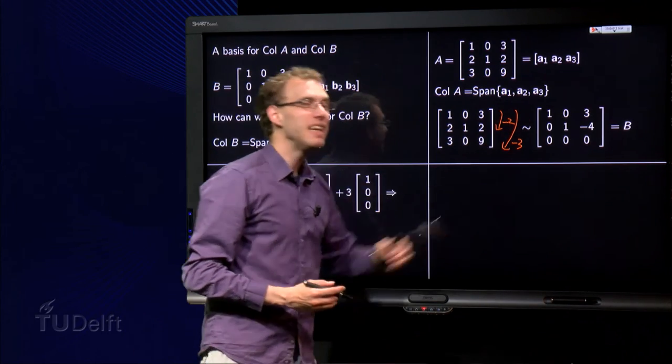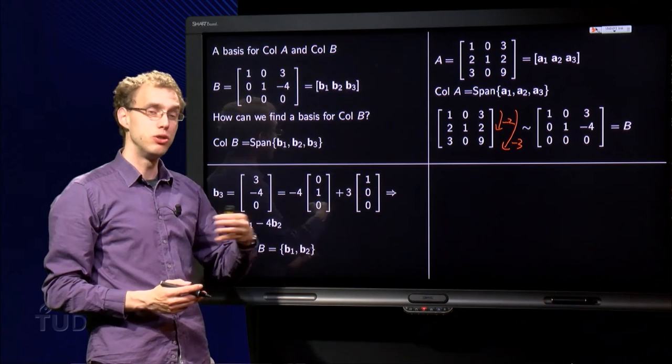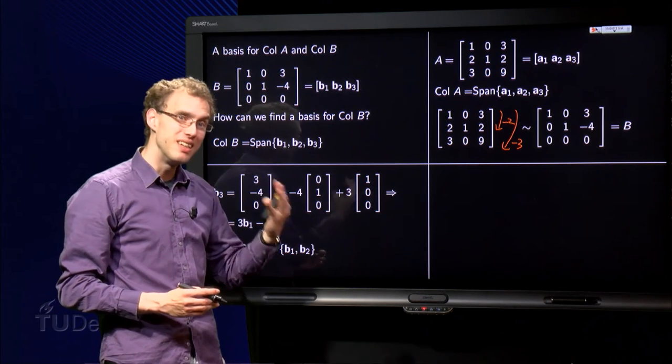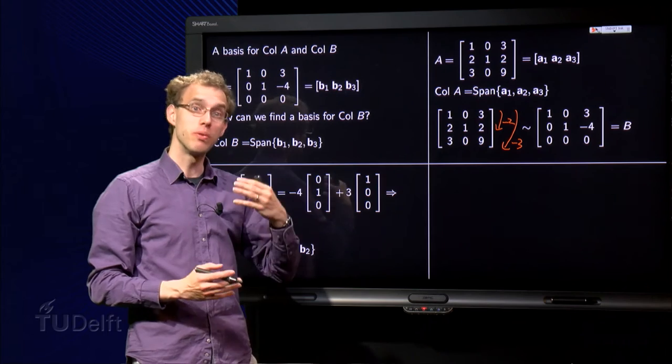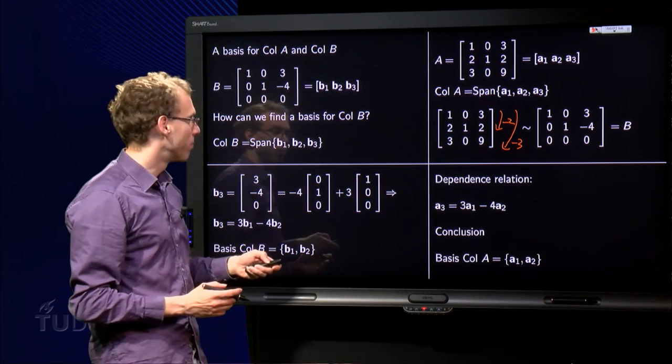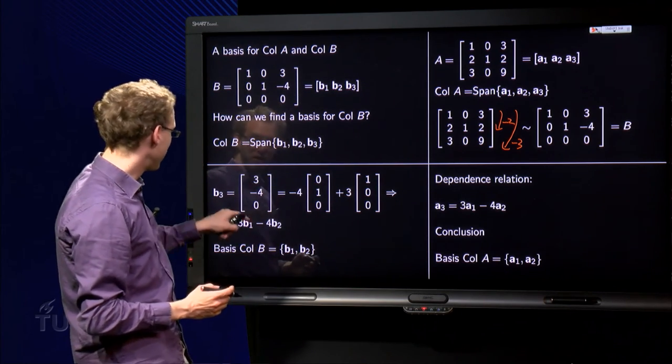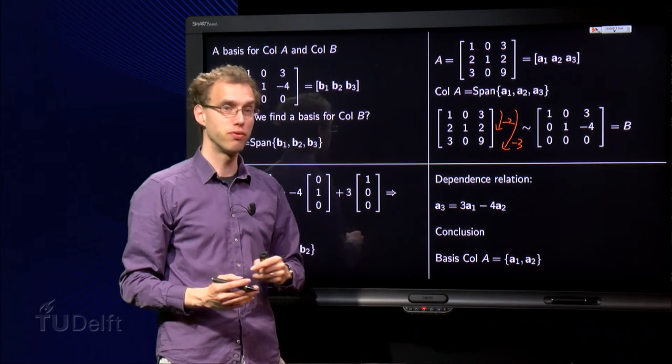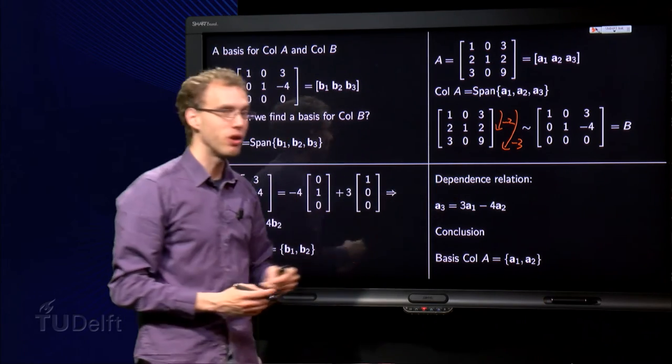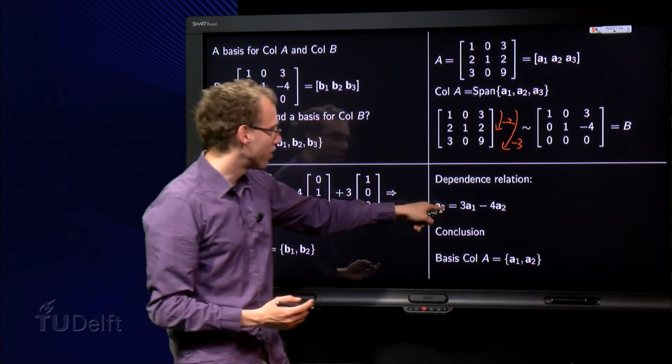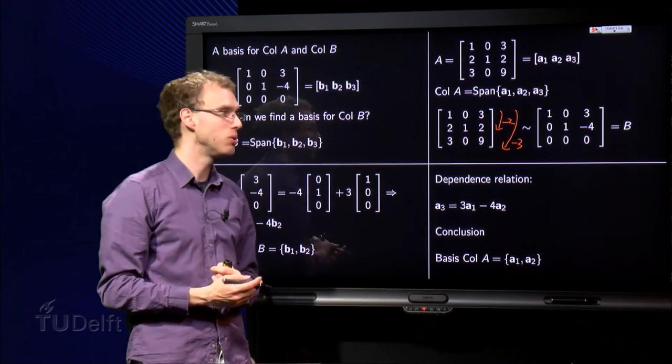But what do we see? Well, the matrix is changing due to the row reduction, but the dependent relations will still be the same. So, if we have here b₃ equals 3 times b₁ minus 4 times b₂, then we also have a₃ equals 3 times a₁ minus 4 times a₂.